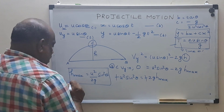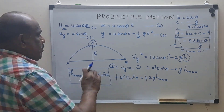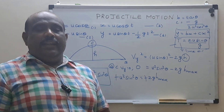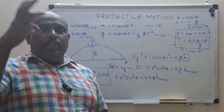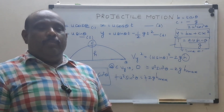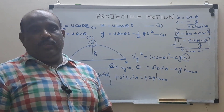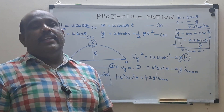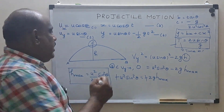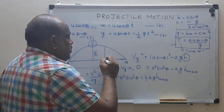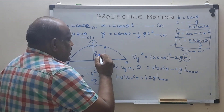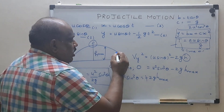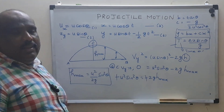So H_max = U² sin²theta / (2g). This maximum height H_max is achieved only at point C — the topmost point of the parabolic trajectory. At any other point along the path, the height h will be less than H_max. Only at C is h equal to H_max.